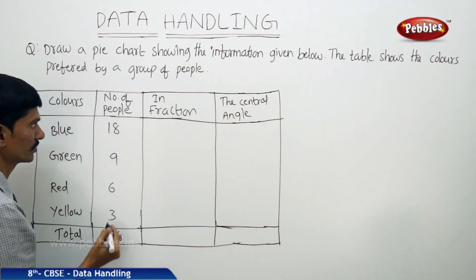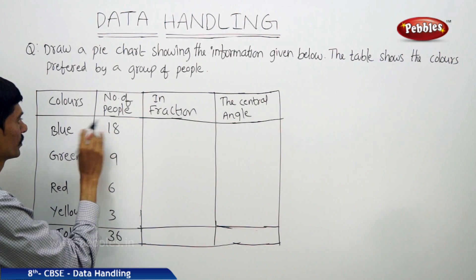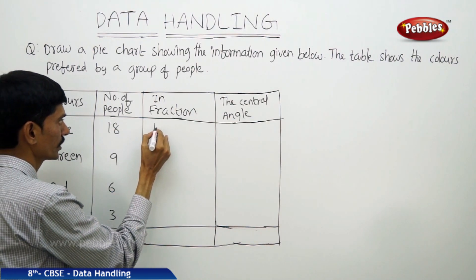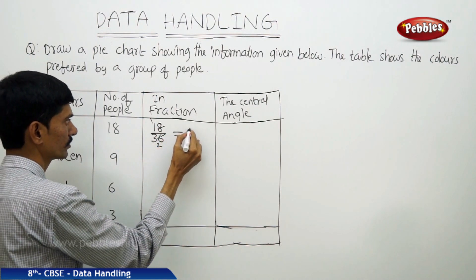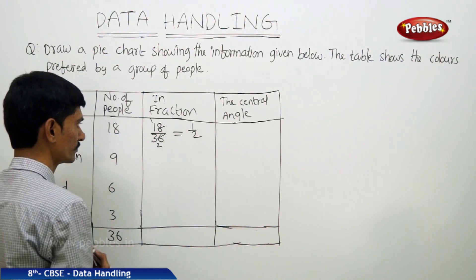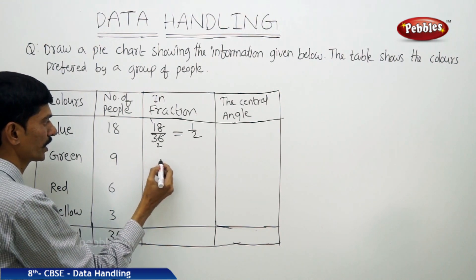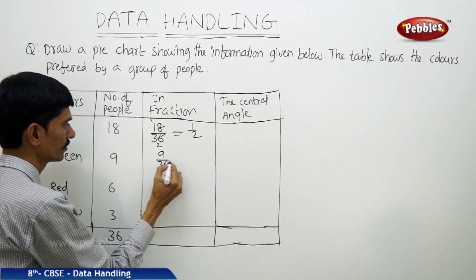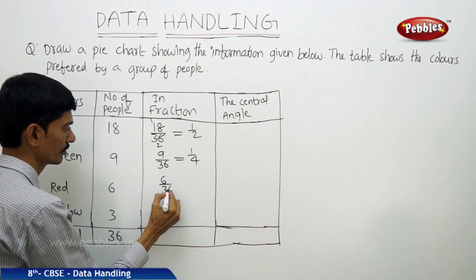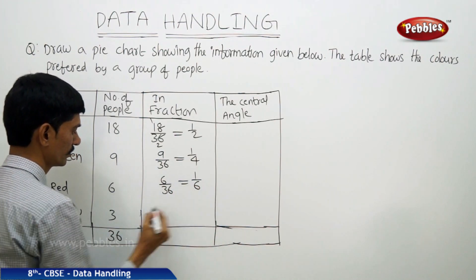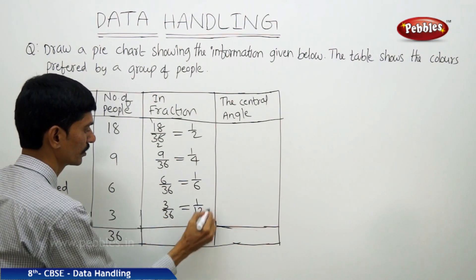The total number of people is 36. The fraction for blue is 18 by 36, which equals 1 by 2. For green: 9 by 36 equals 1 by 4. For red: 6 by 36 equals 1 by 6. For yellow: 3 by 36 equals 1 by 12.